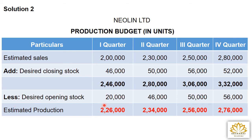Now less the desired opening stock. 1st quarter opening stock given = 20,000. 2nd quarter opening stock = 1st quarter closing stock = 46,000. 3rd quarter opening stock = 2nd quarter closing stock = 50,000. 4th quarter opening stock = 3rd quarter closing stock = 56,000. Estimated production: 1st = 2,46,000 − 20,000 = 2,26,000; 2nd = 2,80,000 − 46,000 = 2,34,000; 3rd = 3,06,000 − 50,000 = 2,56,000; 4th = 3,32,000 − 56,000 = 2,76,000.